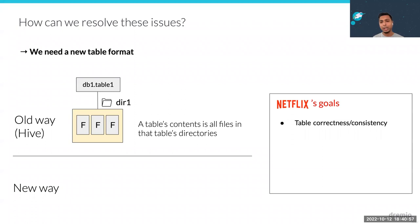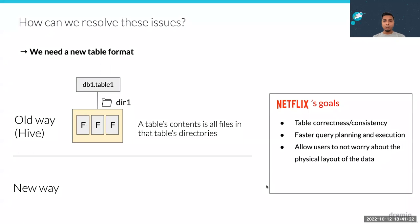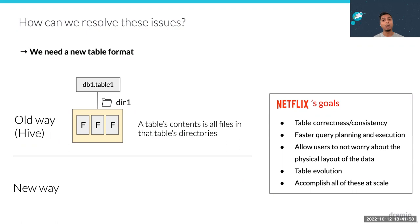They also wanted faster query planning and execution — one query took 10 minutes just to plan a week of data, and users won't wait for that. They didn't want users to worry about the physical layout of data, like explicitly specifying partition columns. The software should handle that. There are also problems with table evolution — tables grow over time, business requirements change, new columns get added. And all of this needs to work at petabyte scale with tables that only keep growing.